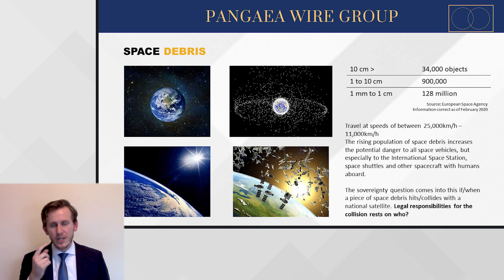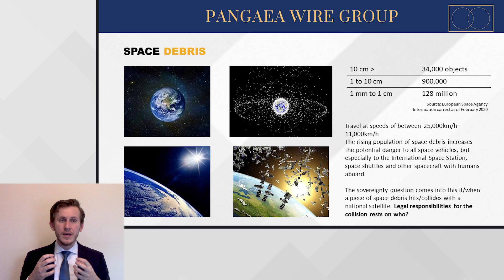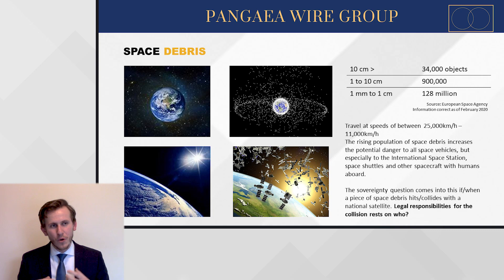It only takes one piece of space debris hitting something like the International Space Station to cause a lot of damage, requiring an international response. Where sovereignty comes in: if a state satellite were hit by space debris caused by another nation, who is actually responsible for that collision if it is important enough to bring to the International Court? Is it the country which first exploded a satellite, which then caused another piece to hit another satellite? It's very complex.